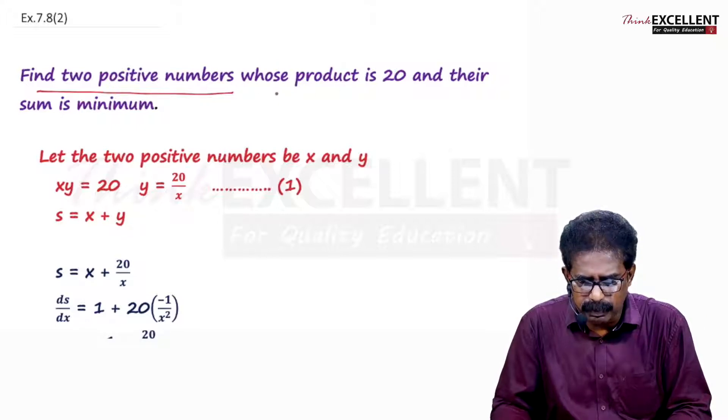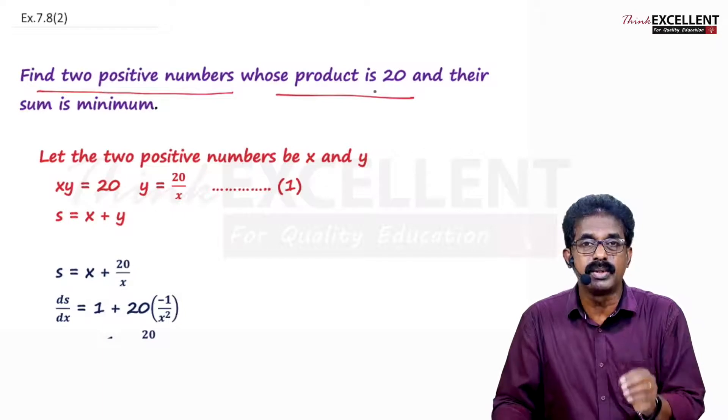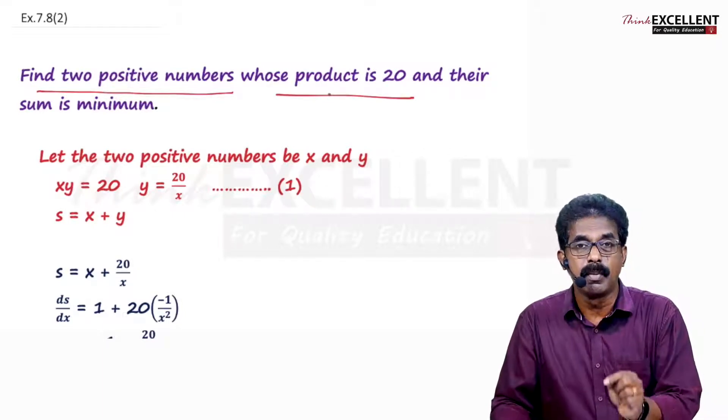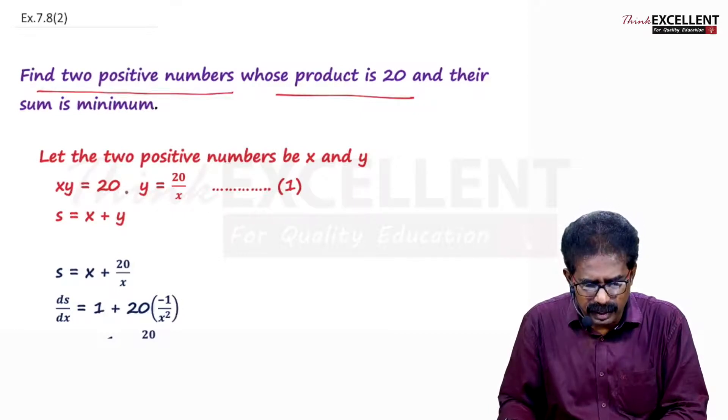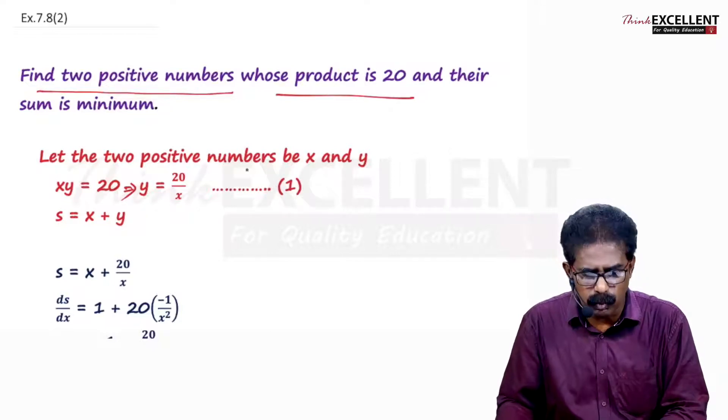Find two positive numbers whose product is 20. You take the numbers as x and y. Product is 20, so x times y equals 20. Find any one letter from here. y equals 20 by x. Take it as equation number 1.